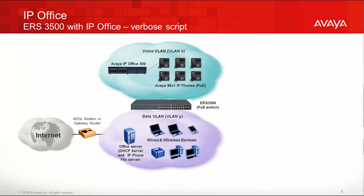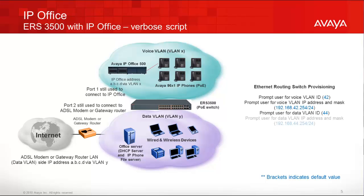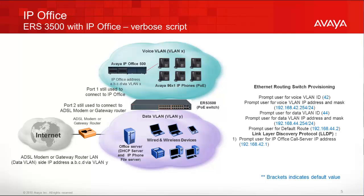In reference to the IP Office verbose script, it will allow the user to either accept the default values or change them. Note that port 1 is still used to connect to the IP Office while port 2 is still used to connect to the gateway router. All other ports from port 3 onward will be used to connect to end user devices. All items shown in blue are the default values, which can be accepted by simply pressing the Enter key at each prompt, or you can change the default value by entering a new value.